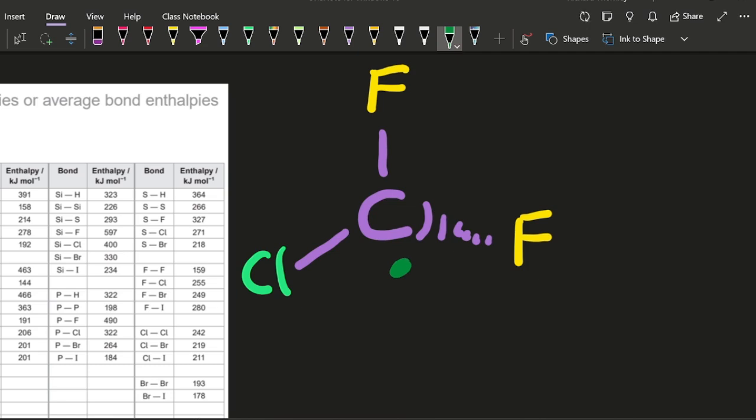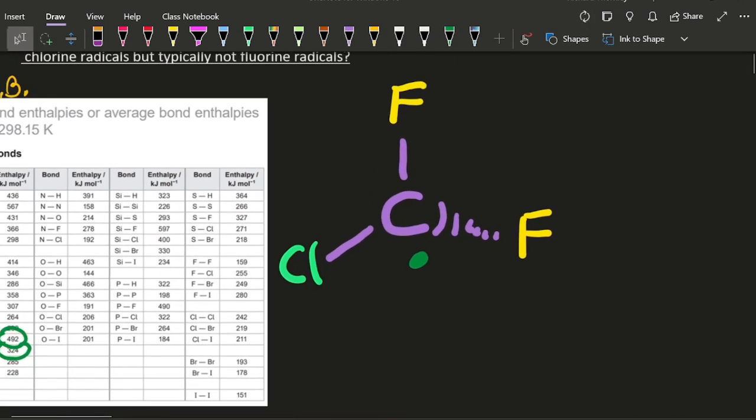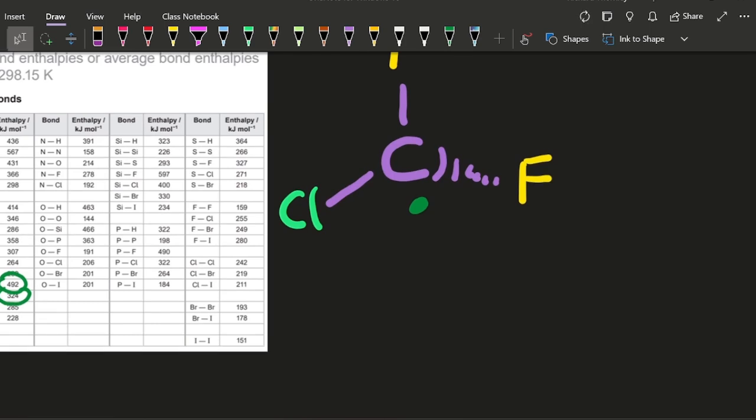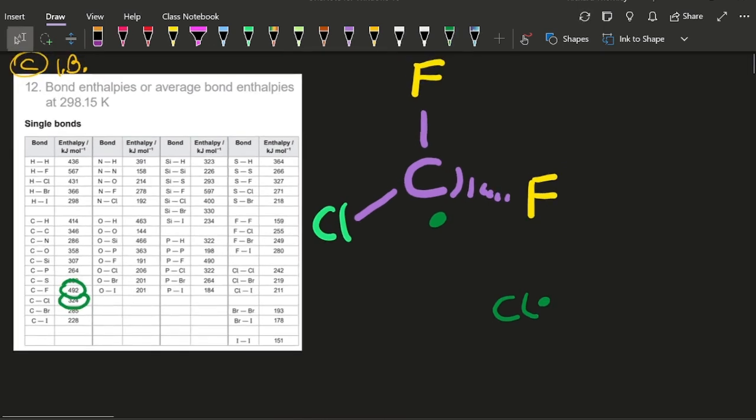And so the two electrons in that covalent bond, one stays with the CF2Cl to make a radical, and the other electron in that bond goes to make a chlorine radical. Less likely to happen with the CF bond because it's a stronger bond. And we're done.